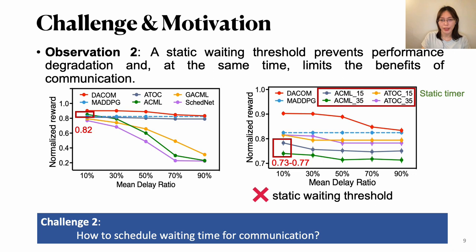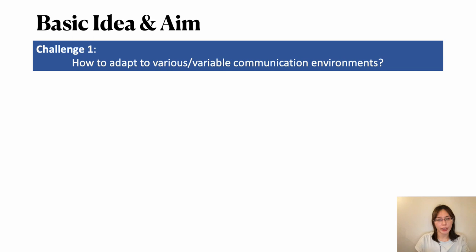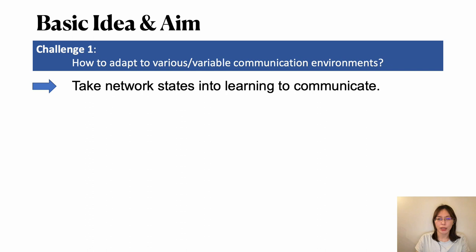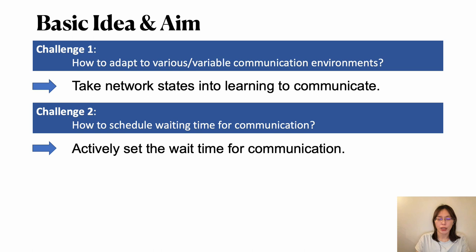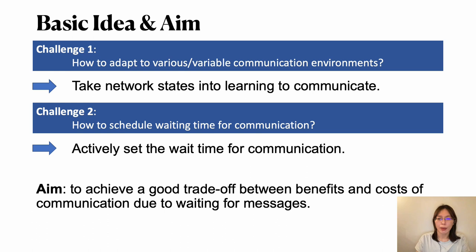Then challenge two is how to schedule waiting time for communication. Consider the networking is changing over time. Given two previous observations and analysis, we give the basic idea and aims of our DACOM. The first challenge is how to adapt to various and variable communication environments. Then we can take network states into learning. The second one is how to schedule waiting time for communication. Our idea is we can actively set the waiting time for communication by learning. So the aim will be how to achieve a good trade-off between benefits and costs of communication due to waiting time for messages.